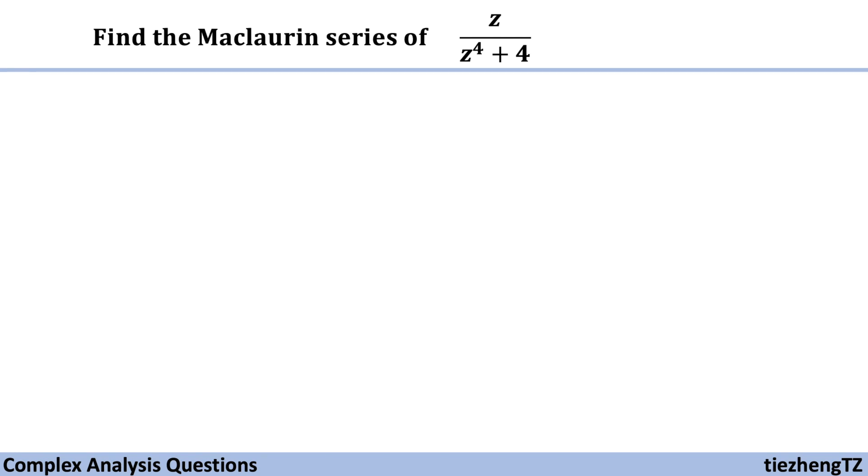So we know we are going to refer to this given format to figure out the Maclaurin series. First we need to change the given function into this format; we need to have 1 minus something in the denominator part.